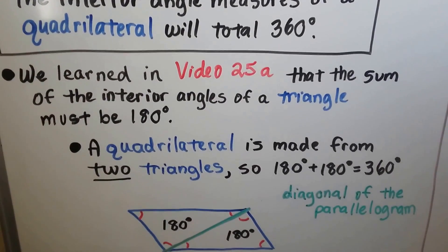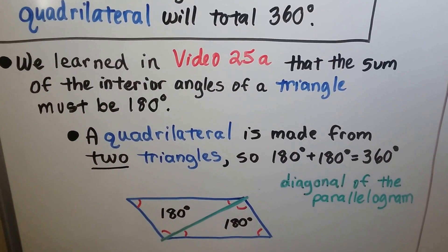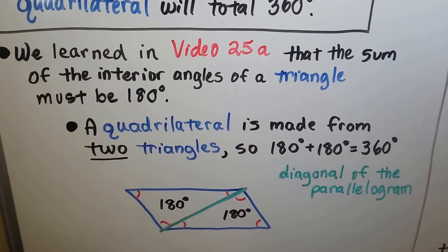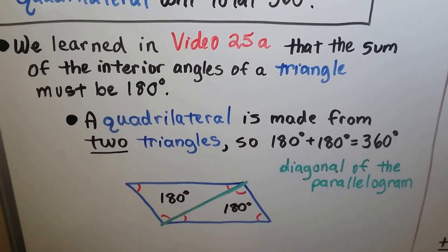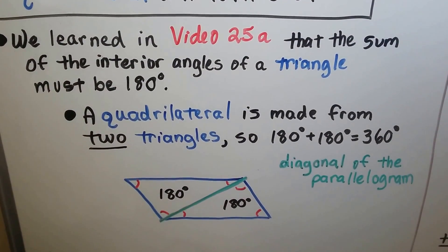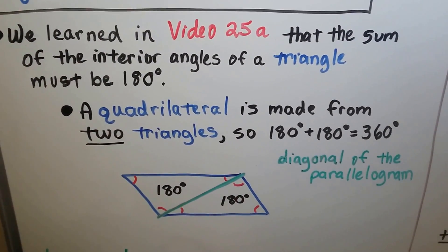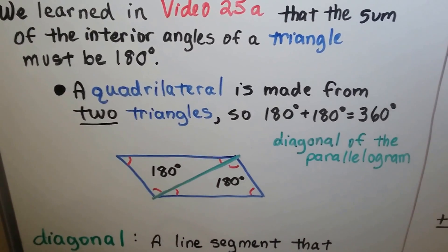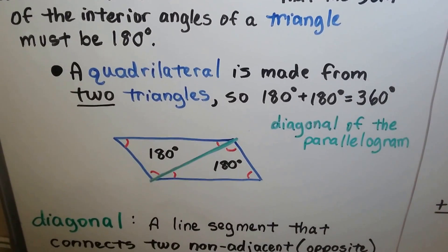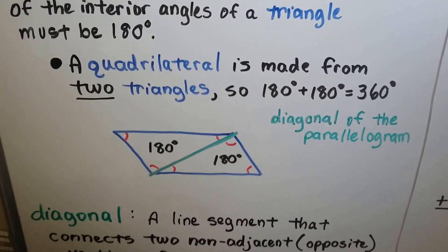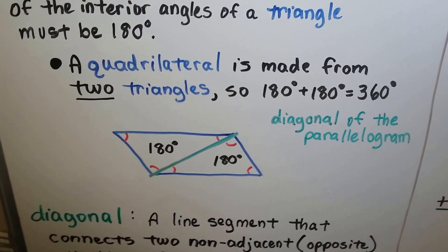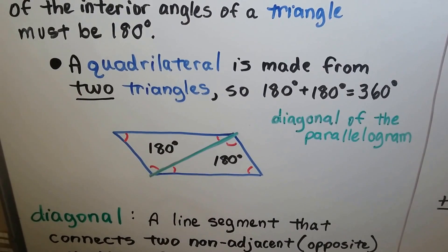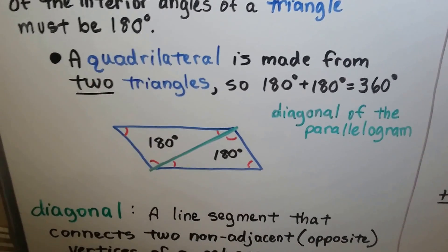We learned in video 25a, the previous video, that the sum of the interior angles of a triangle must be 180 degrees. A quadrilateral is made from two triangles, so 180 plus 180 equals 360.